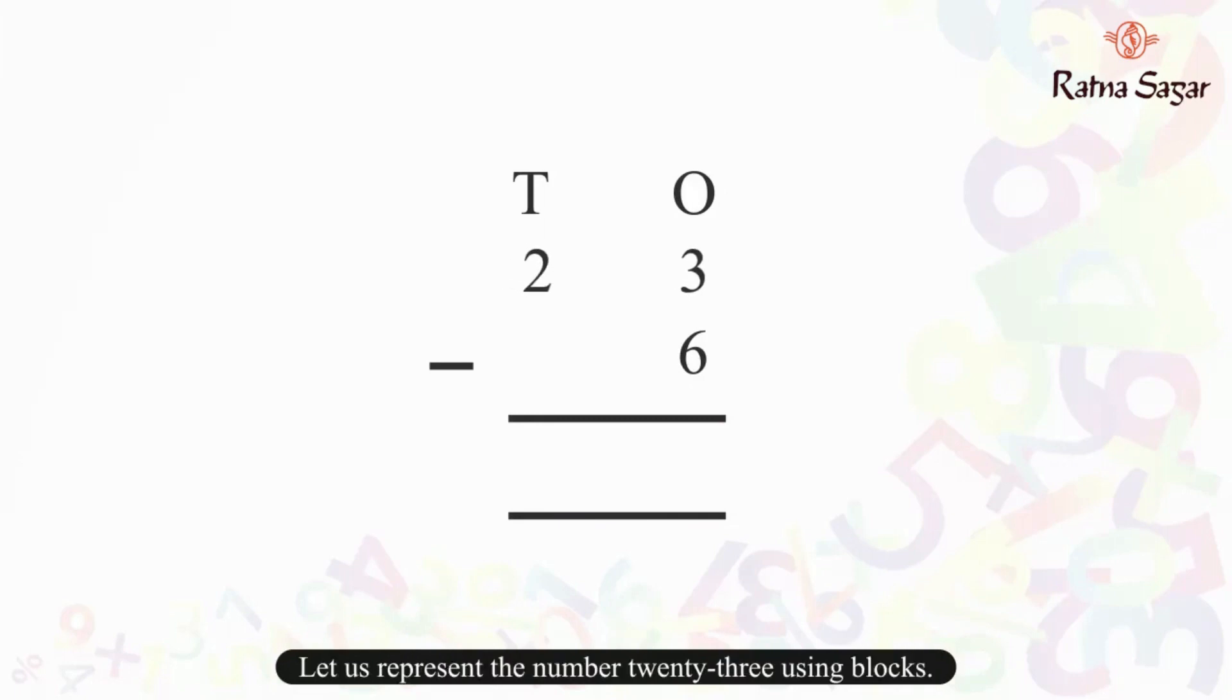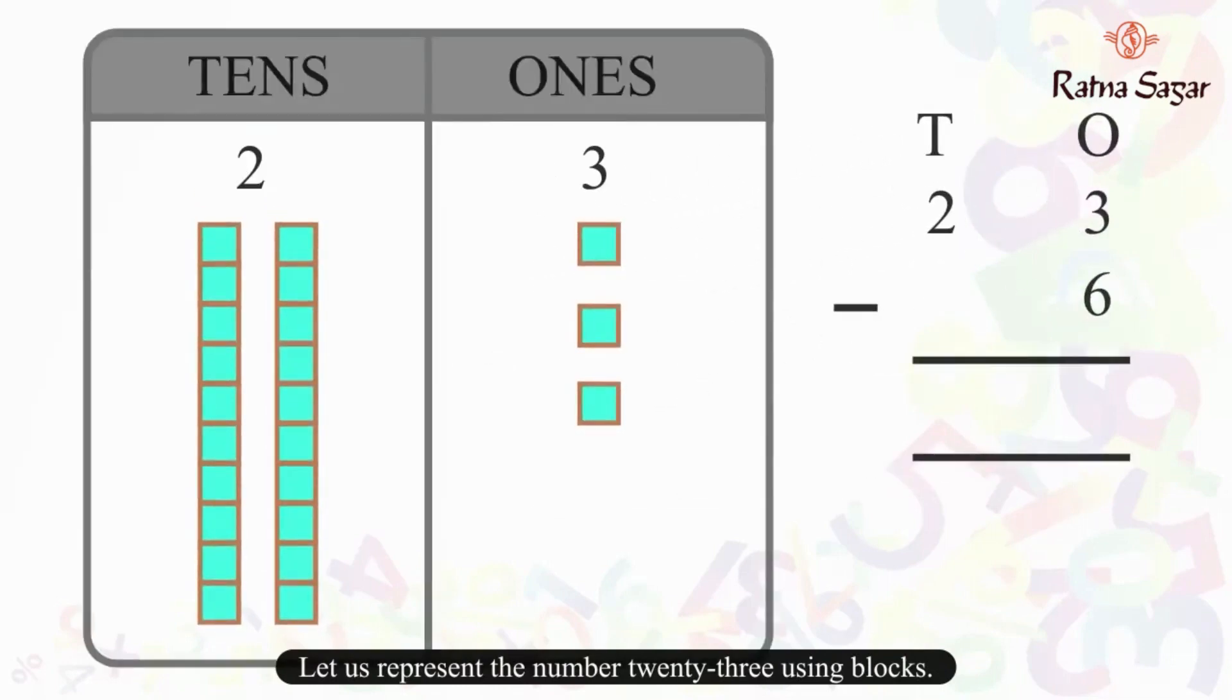Let us represent the number 23 using blocks. Now, we need to first subtract the digits at the ones place. As you can see, the digit on the top, which is 3, is smaller than the digit on the bottom, which is 6.